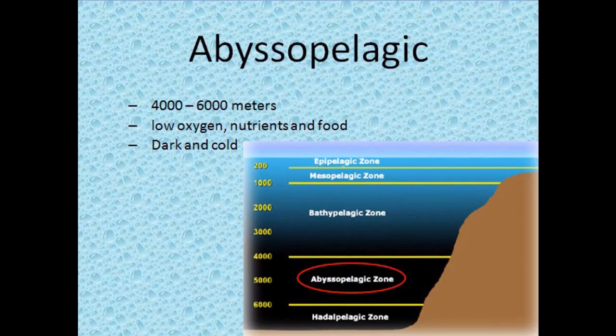The abyssopelagic zone is the next 4,000 to 6,000 meters. It's low in oxygen, nutrients, and food, and is very dark and cold.